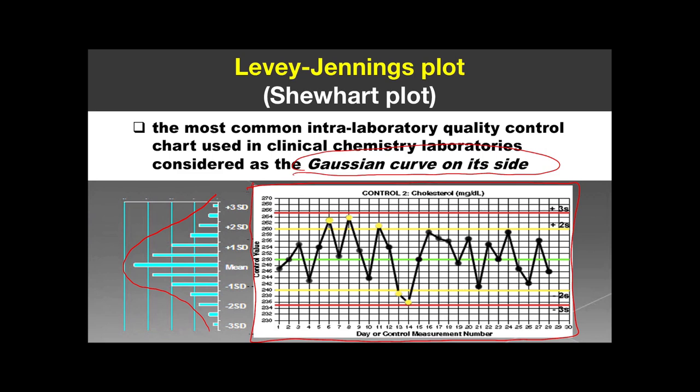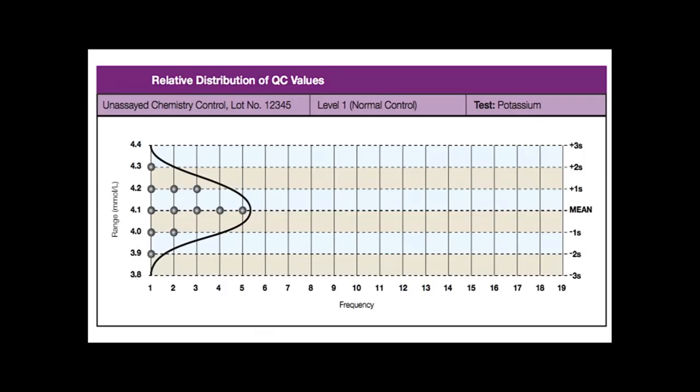Here is an example of a Levy-Jennings chart containing control values for cholesterol. To prepare it, we need at least 20 control values, then calculate the mean and standard deviation, and set the confidence limit — usually at 2 SD. We then plot the control values on the y-axis against the day or time on the x-axis. The chart shows the mean at the center, and the first, second, and third standard deviations above and below.